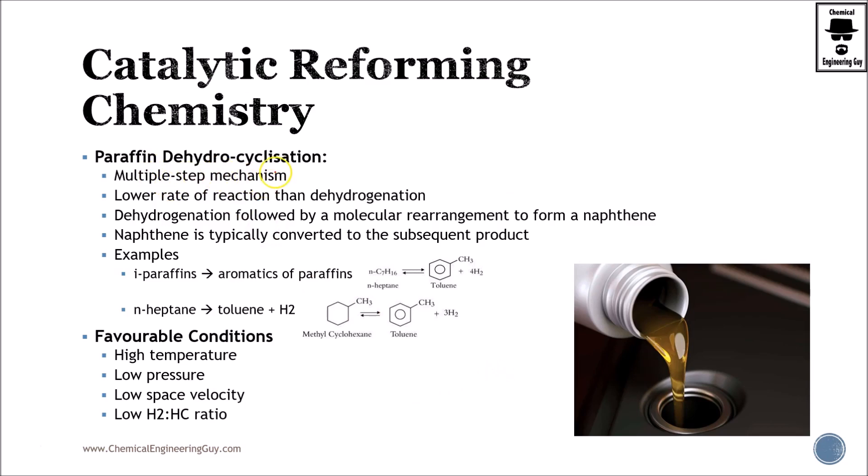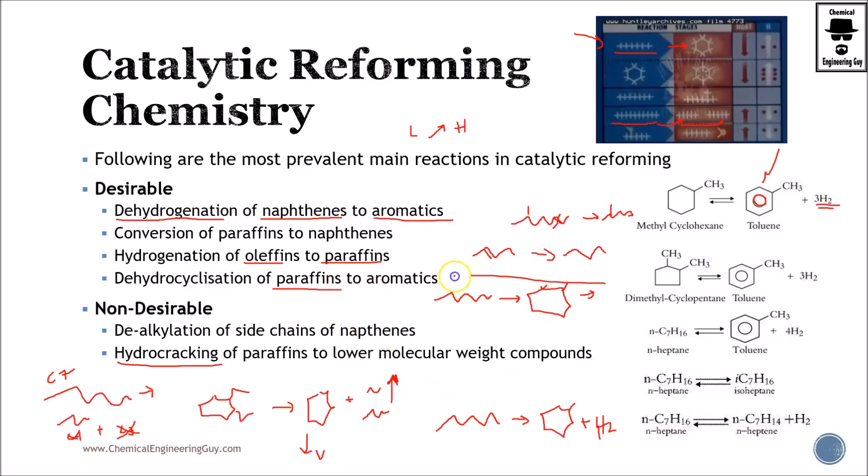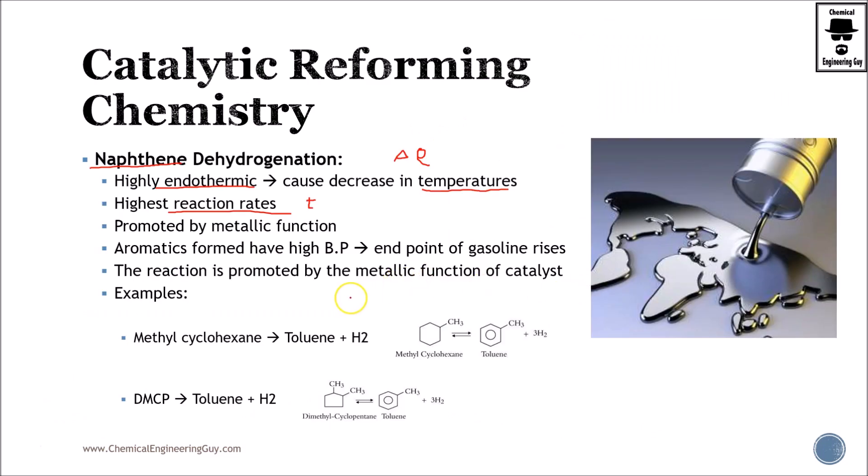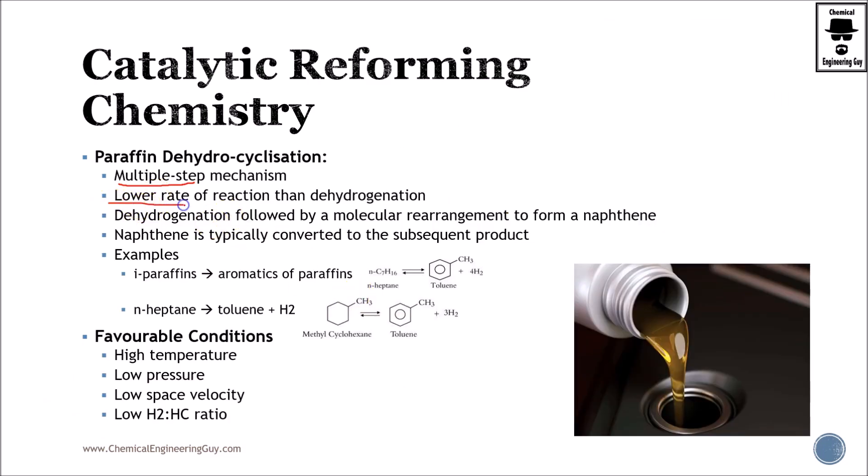The paraffin dehydrocyclization is a multiple step mechanism. It has a lower rate of reaction, obviously more steps implies lower reaction and also more movement of atoms and electrons. The dehydrogenation is followed by a molecular rearrangement to form naphthene. Naphthene is typically converted to the subsequent product which is an aromatic, let's say some benzene containing ring. So you have isoparaffin converts to aromatic or n-heptane converts to aromatic. Here are two examples. Recall that we have one step in between.